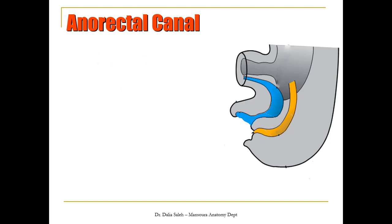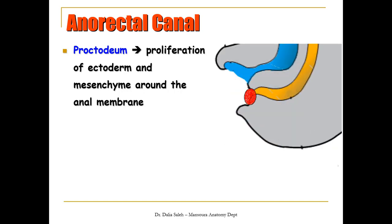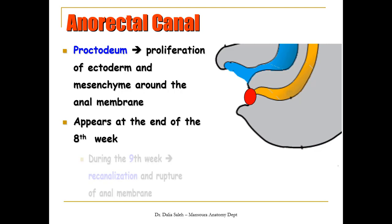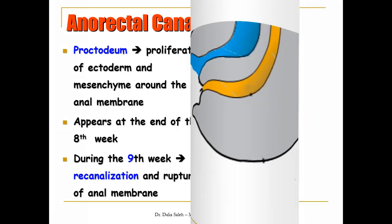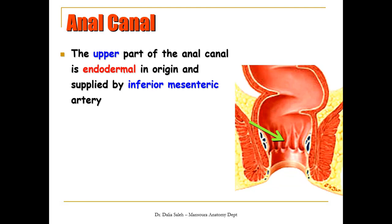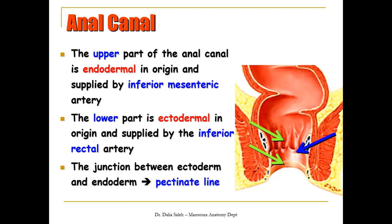For the development of the anal canal: first, there is proliferation of the ectoderm and mesenchyme around the anal membrane, forming what is called the proctodeum. It appears at the end of the eighth week of development, and during the ninth week it recanalizes and the anal membrane ruptures. Thus the anal canal is now formed of two parts: the upper part is endodermal in origin and supplied by the inferior mesenteric artery, while the lower part is ectodermal in origin and supplied by the inferior rectal artery. The junction between these two is identified by the pectinate line.